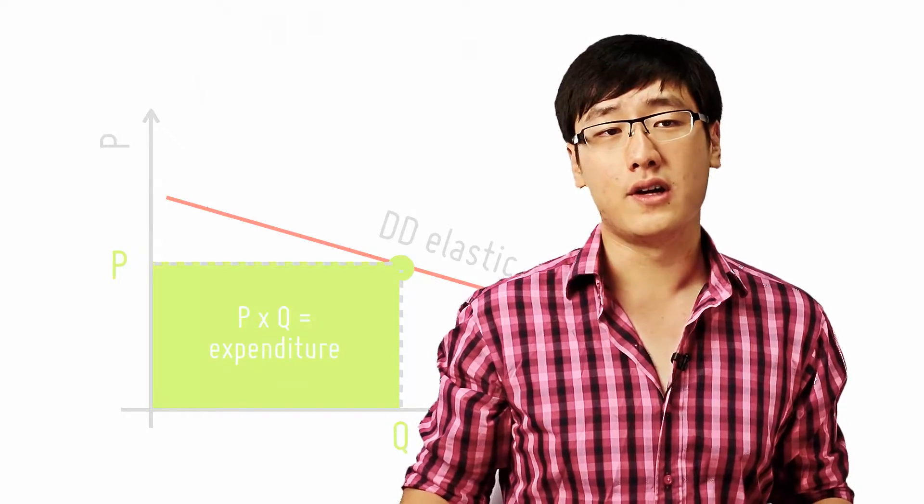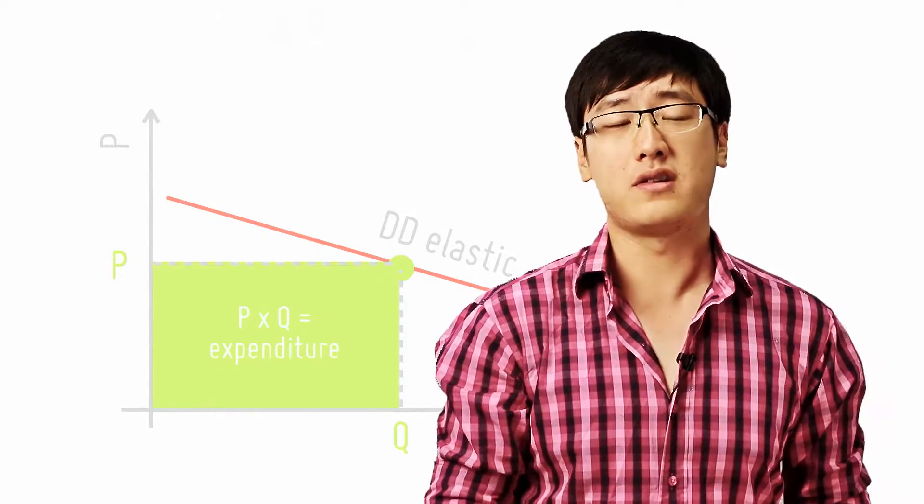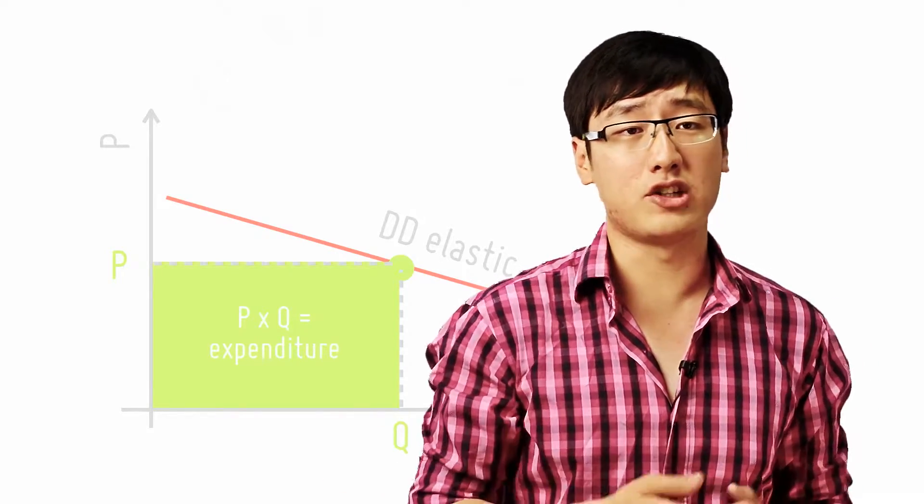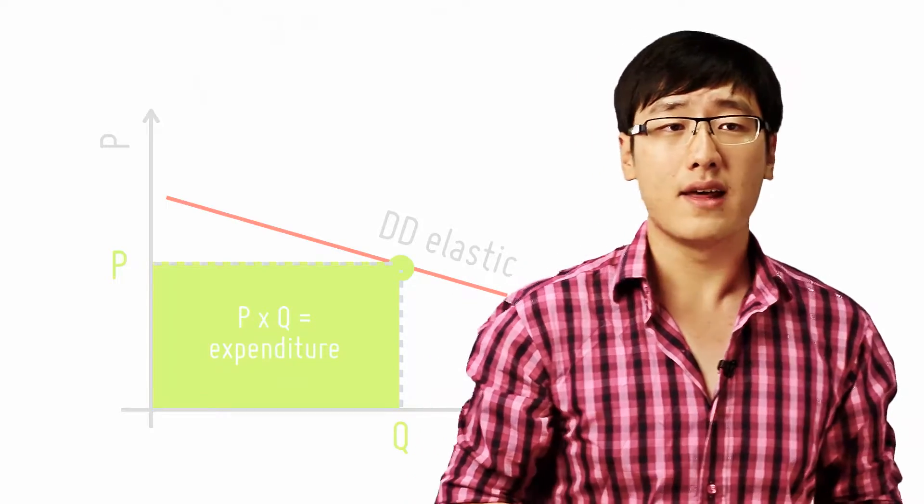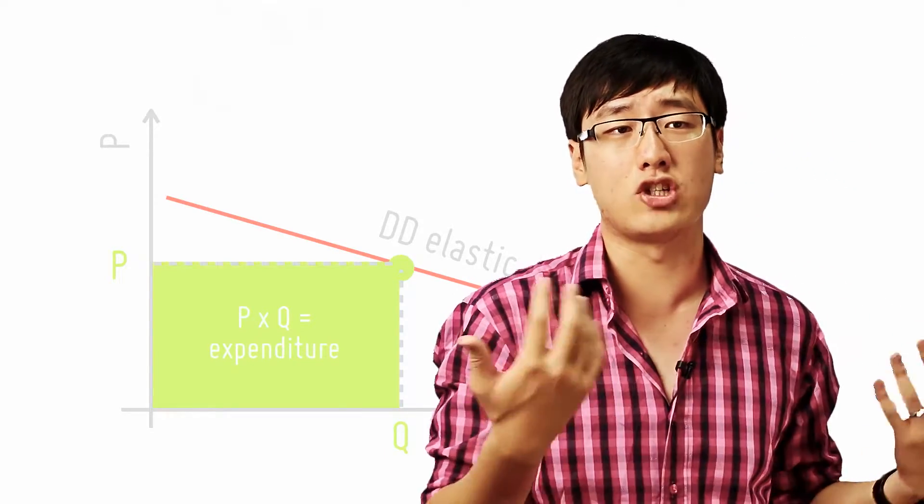Elasticity has implications for consumer expenditure. Now because as price increases, quantity demanded falls, when the demand is elastic, quantity demanded changes proportionally more than the price. Thus the change in quantity has a bigger effect on the total consumer expenditure than does the change in price.